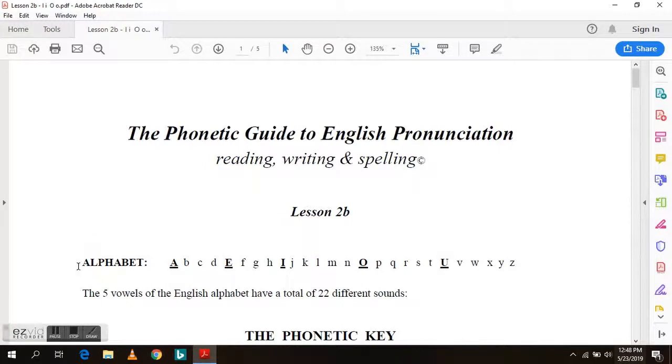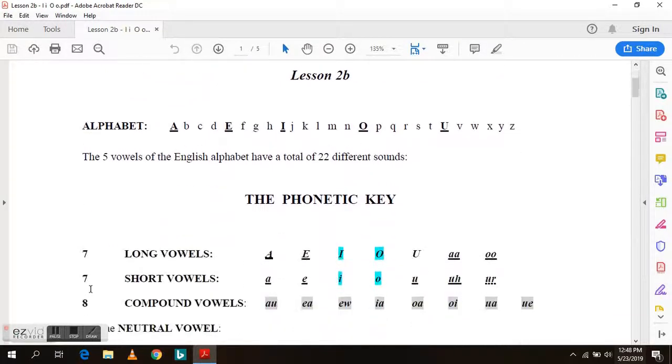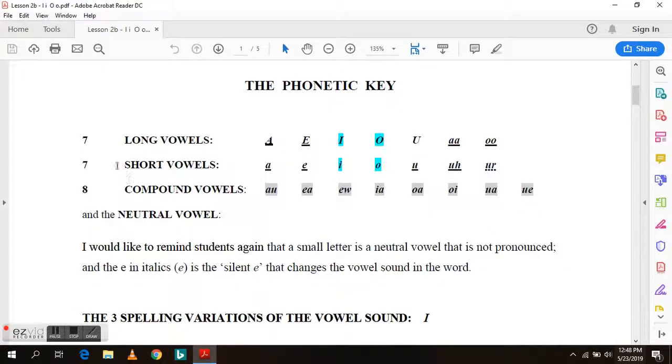As we've seen before, the alphabet consists of 5 vowels, but these 5 make up 22 different vowel sounds. Here is the phonetic key. There are 7 long vowels, 7 short vowels, 8 compound vowels and the neutral vowel. Today we're working with the long vowels I and O and the short vowels I and O. I would like to remind students again that the small letter is a neutral vowel that is not pronounced and the E in italics is the silent E that changes the vowel sound in the word.